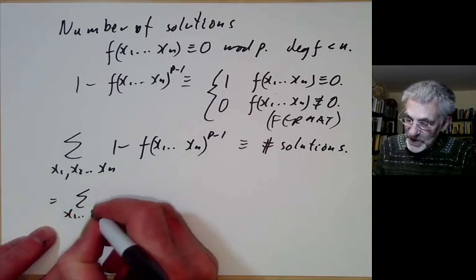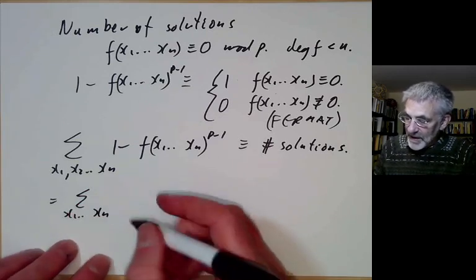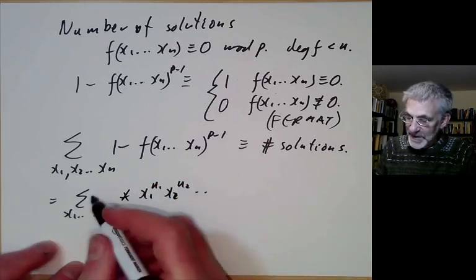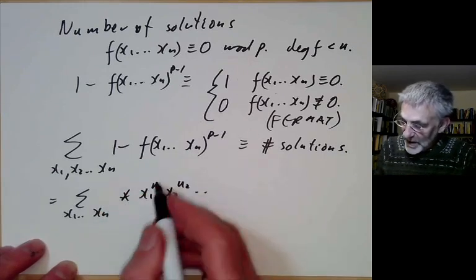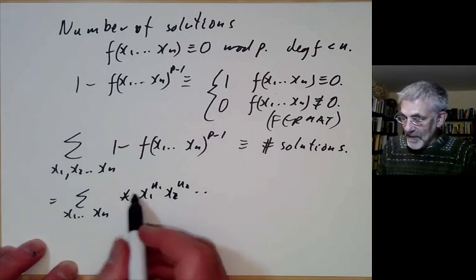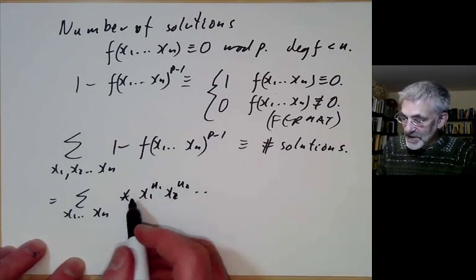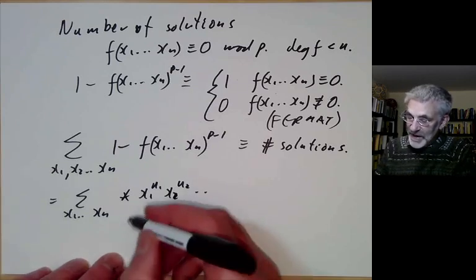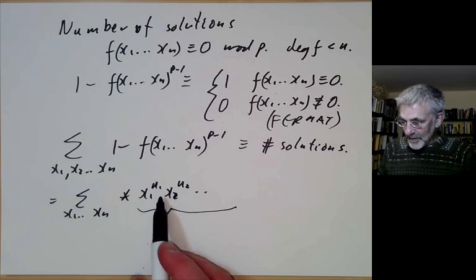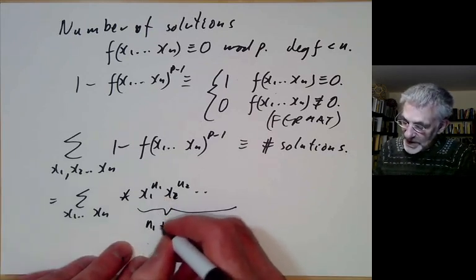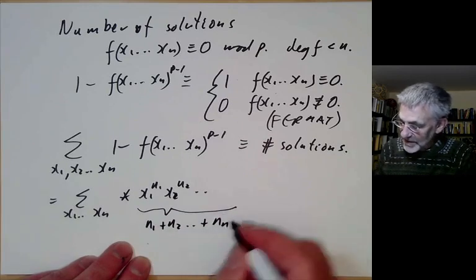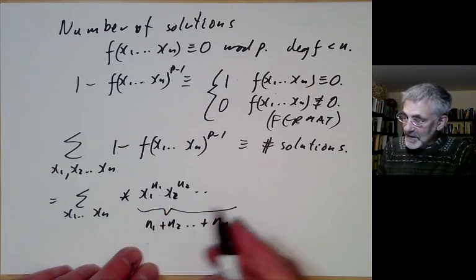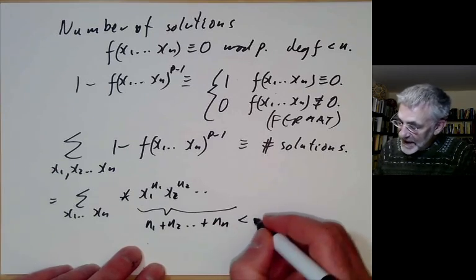Now let's expand this out. It will be sum over x1 up to xn of some huge sum, some constant times some monomial x1^n1 times x2^n2 and so on. So this will be a sum over all possible exponents. And for each collection of exponents, we will have some sort of coefficient here. And what we want to do is to show that this is congruent to 0 mod p. And if we look at this monomial, we notice that the exponent is n1 + n2 + ... + nn. I guess I shouldn't have reused the n for the exponent. Well, too bad.